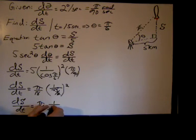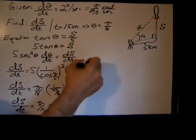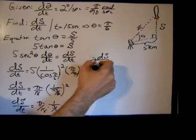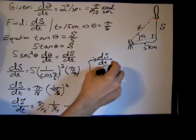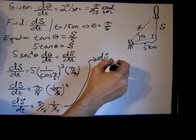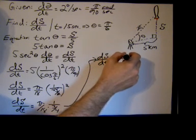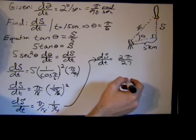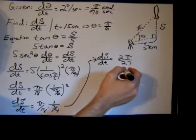Then makes ds dt equal pi over 18 times 1 over root 3 squared is just 3, 2 squared is 4. So bringing it up here we get ds dt equals 4 over 18 is 2 over 9, 9 times 3 is 27, so we get 2 pi over 27 kilometers per second.